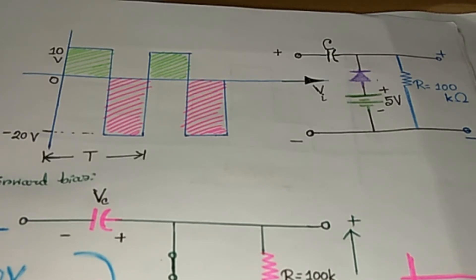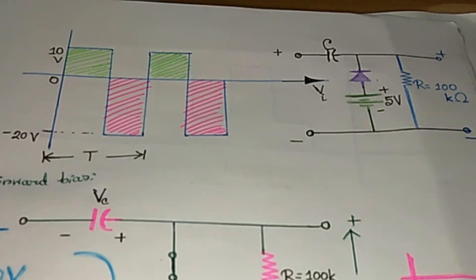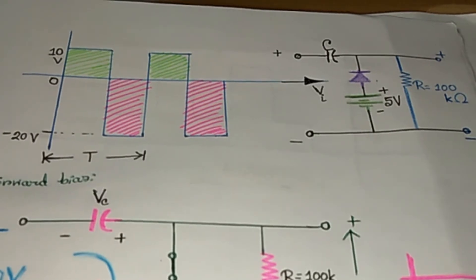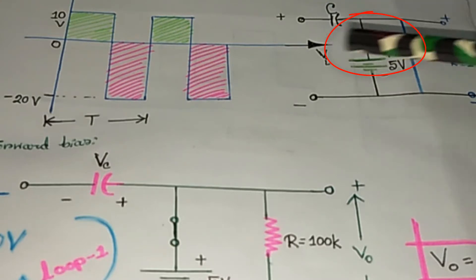Based on that half cycle, we need to draw the diagram. Then we need to identify the negative and positive terminals of the capacitor. If we solve problems step by step, it will become very easy for you. As we discussed in the previous diode tutorial...